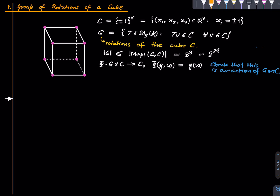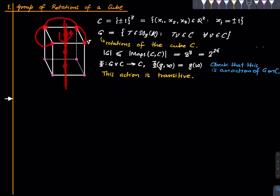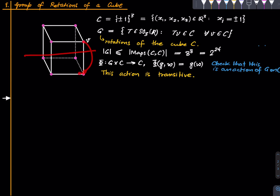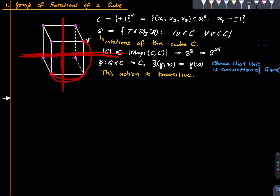This action is transitive, meaning it has only one orbit. To see this, take the vector v = (1,1,1). If we rotate about the vertical axis passing through the midpoints of two faces, a 90-degree rotation moves this point around, and after further rotations about other axes, we can reach all eight vertices. Therefore the orbit of v contains all eight points, and the action is transitive.